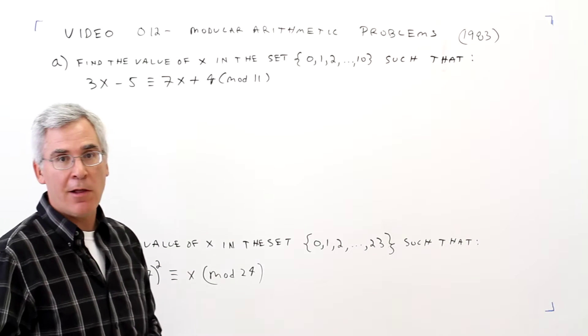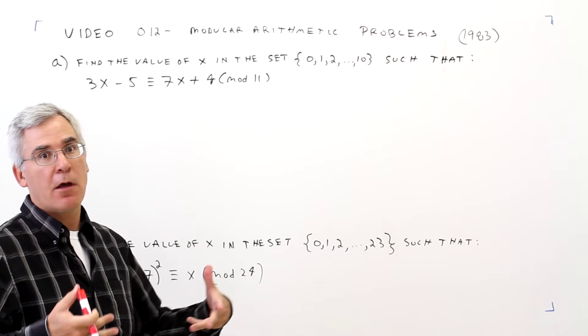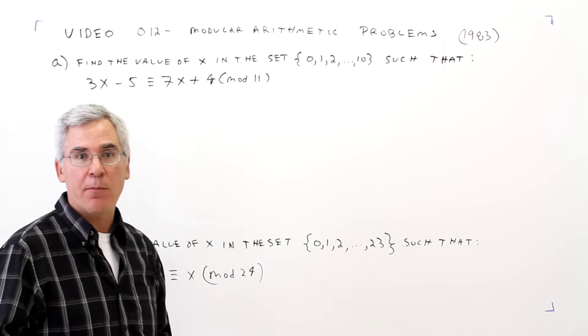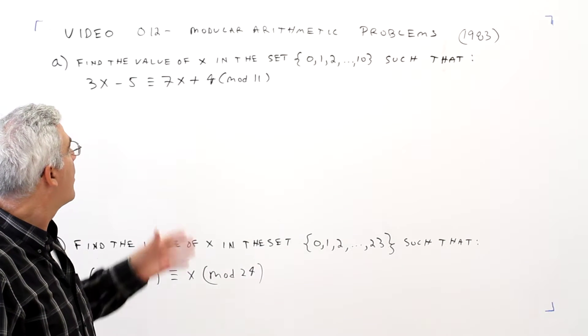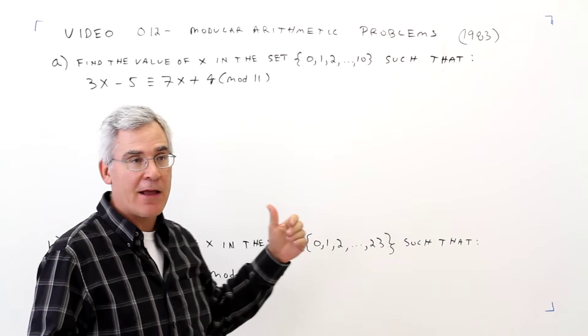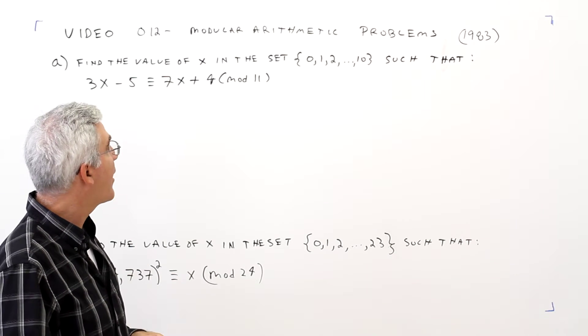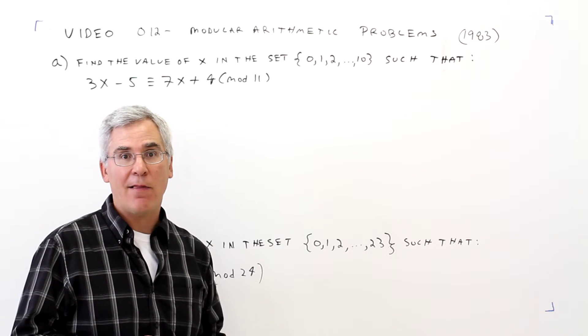Welcome to video 012, two more problems dealing with modular arithmetic from a 1983 math team contest. First problem, find the value of x in the set 0 through 10 such that 3x minus 5 is congruent to 7x plus 4 in mod 11.